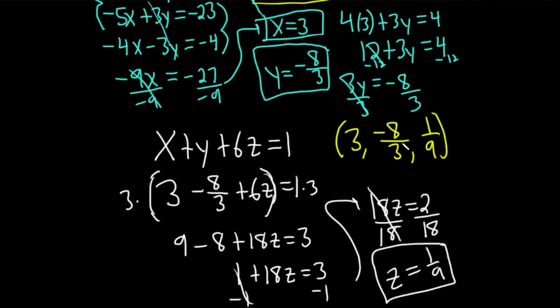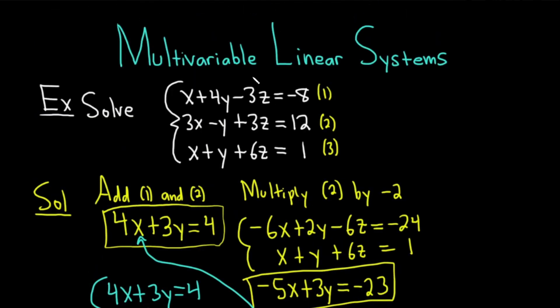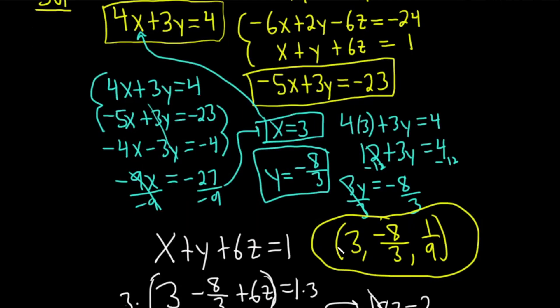The final answer is the ordered triple: 3 comma negative 8 thirds comma 1 ninth. It's a point in space. These are actually equations of planes. We have three three-dimensional planes in space, and they're all magically intersecting in a single point in this case. And that point is our answer.